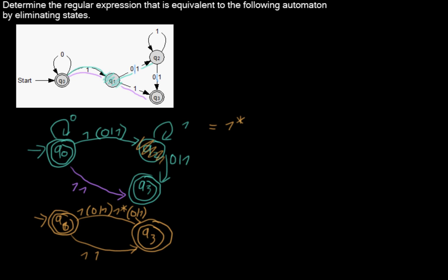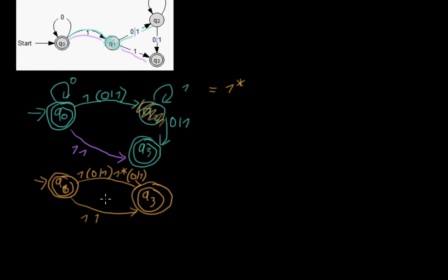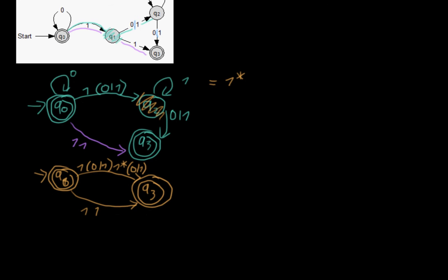So what we are doing now is when we are left with an automaton that has only the initial state and the final states left, for each final state, we will now create a new automaton which only consists of the initial state and that final state, and we will eliminate all others.